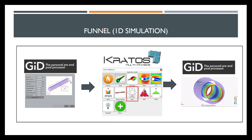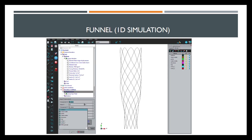In our case, we used Kratos for creating the models and for running the simulations. As you can see in this slide, we created a specific application called 'stent' in order to have all the tools integrated there. The structural application of Kratos is used for these models. We can easily create the models using the different groups of entities, providing the data following the tree and imposing the loads and boundary conditions. In this example, we are imposing boundary conditions in the bottom nodes of the stent by simply choosing the appropriate group.